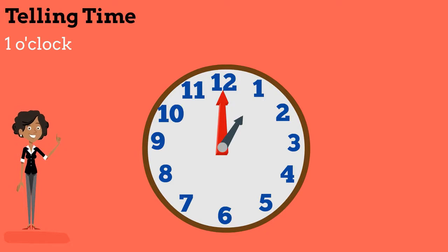When the short hand is on one, it is one o'clock. Now the short hand is on two. What time is it? It's two o'clock.